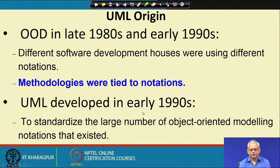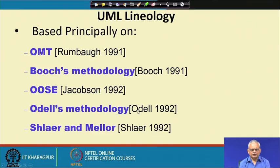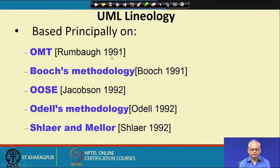An attempt was made to standardize all these different design methodologies and notations. The ones that were extremely popular in those days were OMT — Object Modeling Technique by Rumbaugh, Booch's methodology by Grady Booch, Object Oriented Software Engineering by Jacobson, Odell's methodology, and Shlaer-Mellor methodology. Each of these had its own design methodology as well as very different notations.